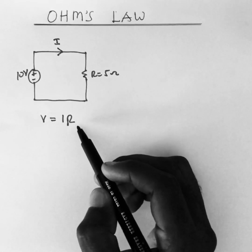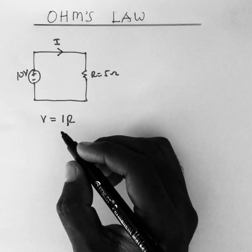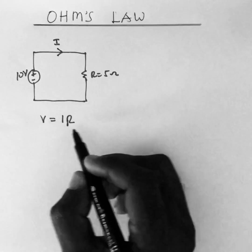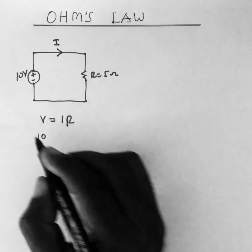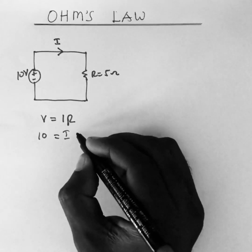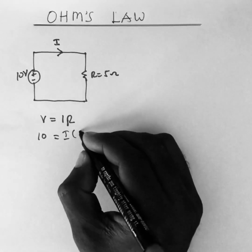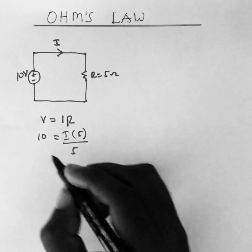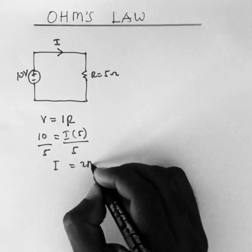Having this formula and considering this circuit, we can find the value of i, the current flowing through the resistor. Using Ohm's Law: 10 volts is equal to i multiplied by the resistance of 5 ohms. Dividing both sides of the equation by 5, we get our current to be 2 amperes.